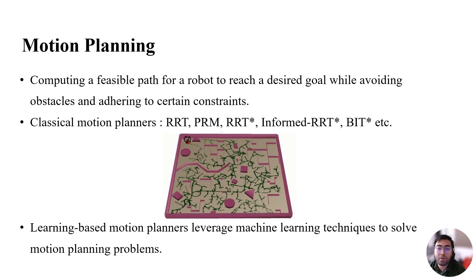Motion planning is the process of determining a feasible path for a robot to follow in order to transition from an initial state to a desired goal state while avoiding obstacles and adhering to specific constraints.